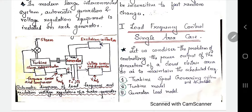For studying this load frequency control, we are going to consider the problem of controlling the power output of generators of a closed electric area to maintain the scheduled frequency. All the generators working under such a closed electric area constitute a coherent group, so that all the generators speed up and slow down together, maintaining their relative power angles. Such an area is known as a control area.